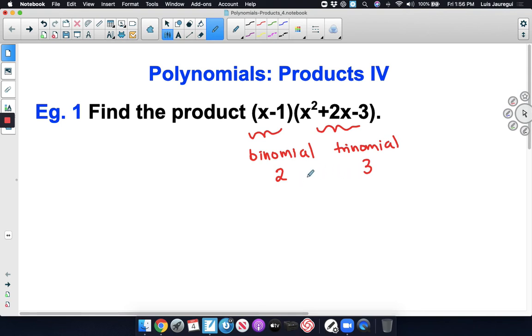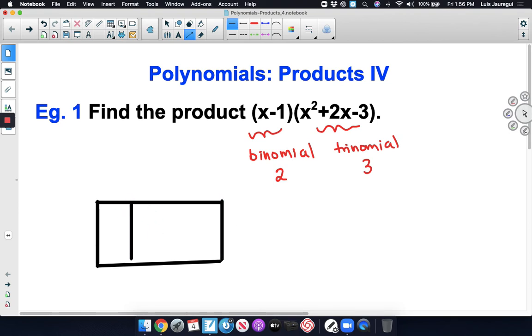These two numbers are going to give us the actual dimensions for the area model. In this case, I'm going to build a rectangle of dimensions 2 by 3. So let's make sure that we have two rows and three columns here as we come up with the area model for this particular product.